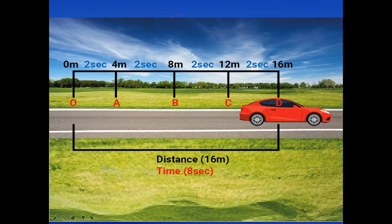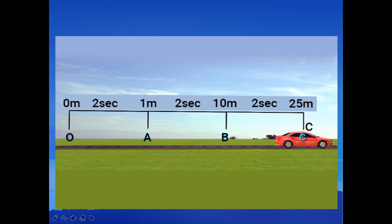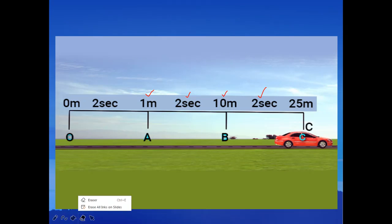Now let's see an example of non-uniform motion. In the first two seconds, the car has travelled just one meter. In the subsequent two seconds, it has travelled nine more meters and reached 10 meters. Then in the next two seconds, it has travelled 15 meters. So it is covering different distances in equal intervals of time, and thus it is an example of non-uniform motion. I hope you now have a fair idea about uniform and non-uniform motion.